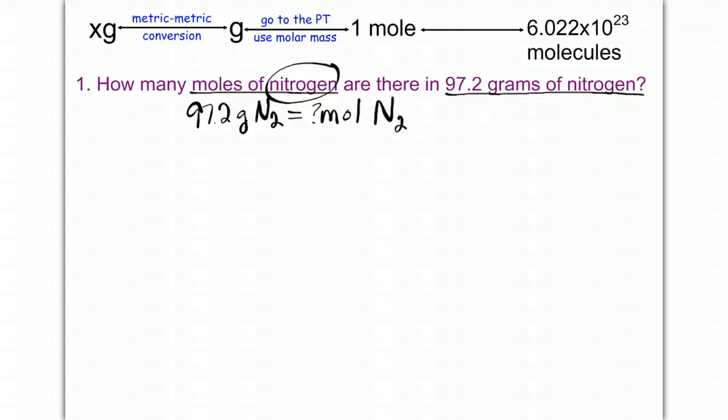and I want to change that to moles of N2. So I'm going to take my given, which is this, and I'm going to put it over 1. 97.2 grams of nitrogen, all over 1, times, draw a line. I'm going to take my unit, grams of nitrogen, which is right here, and I'm going to bring that down. So I'm going to write grams of nitrogen at the bottom. This way, my grams of nitrogen will cancel out.